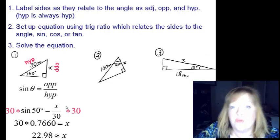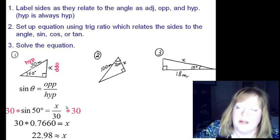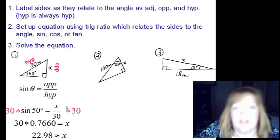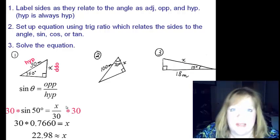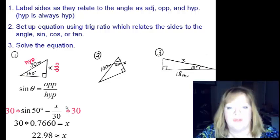We would just get twenty two point nine eight, that's approximately x. When you're solving for lengths of sides, rounding to the nearest hundredth or the nearest tenth is good enough. I'd probably say twenty three for this one.